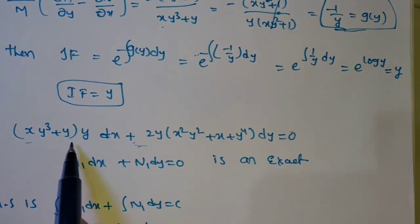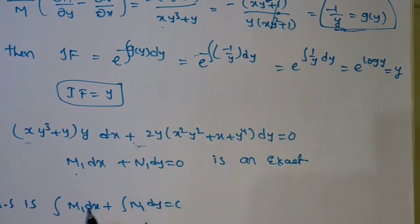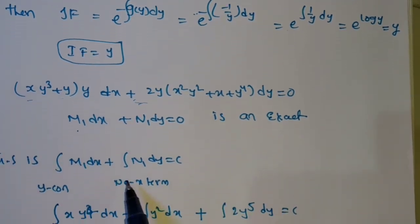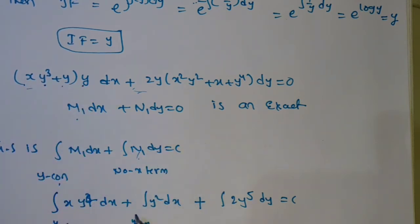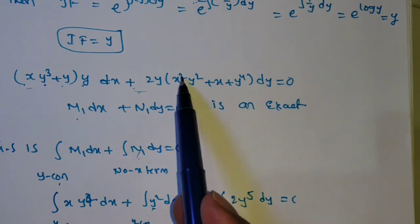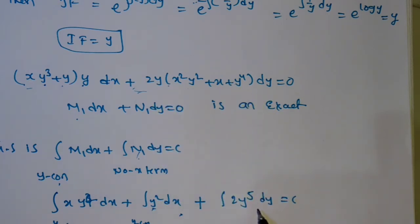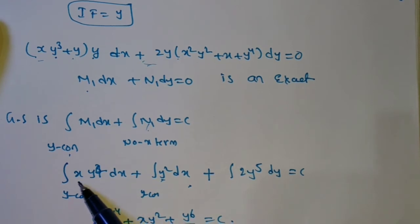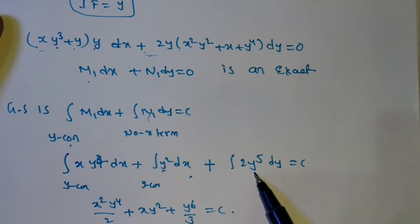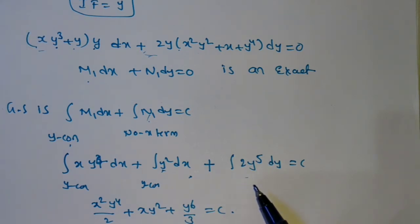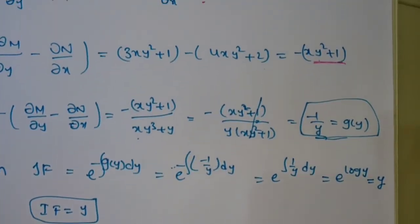Multiply y through the equation to get M₁ dx + N₁ dy = 0 (exact). The general solution is integral of M₁ dx plus integral of x-free terms in N₁ dy = c. This gives x²y⁴/2 + xy² + y⁶/6 = c. That is the general solution to the second problem.